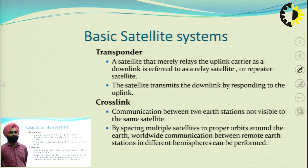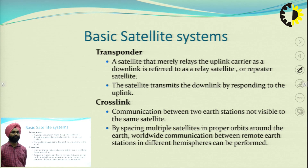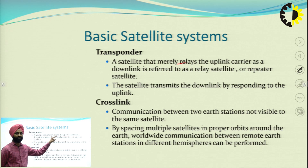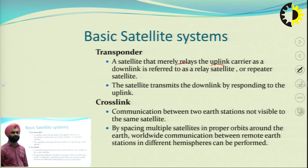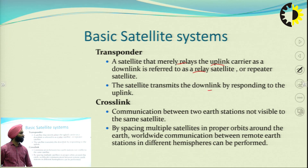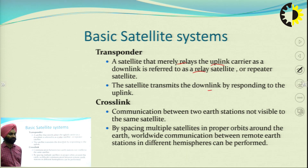The basic satellite system consists of a transponder and crosslinks between the earth station and the satellite. A transponder is a relay which converts the uplink carrier to a downlink — also referred to as a relay satellite or repeater satellite. The satellite transmits the downlink by responding to the uplink.